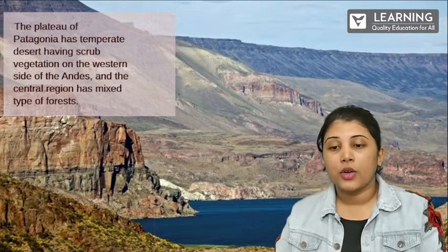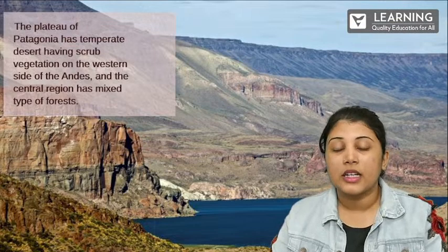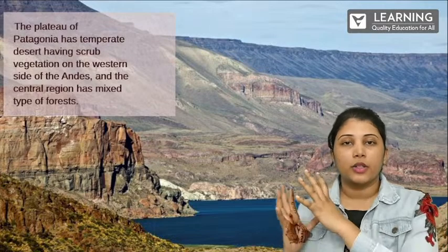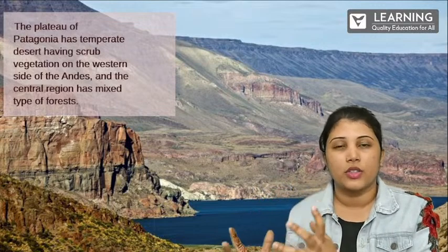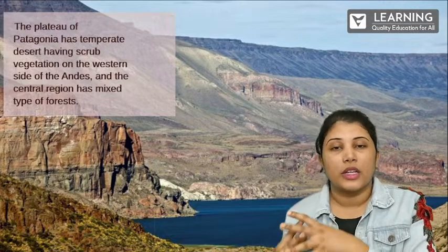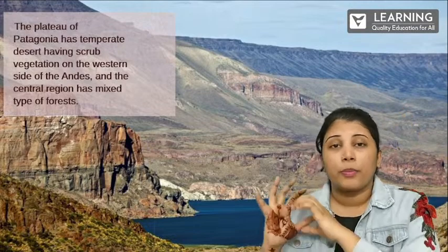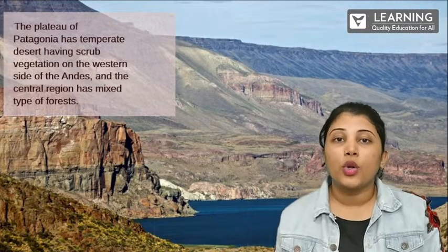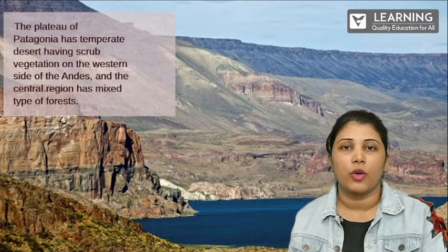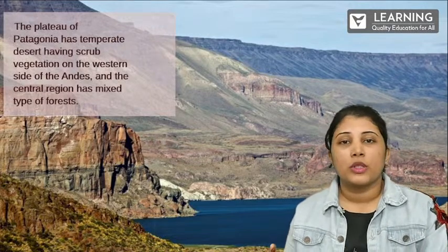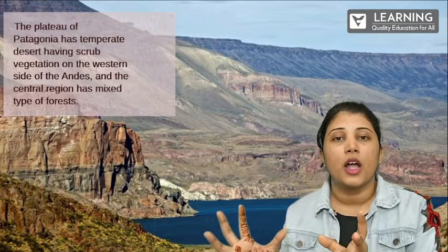The plateau of Patagonia has a temperate desert with scrub vegetation on the western side of the Andes, and the central region has mixed types of forest. This plateau in South America has desert-like temperatures — due to less rainfall and lots of heat, plants don't grow well there; only some coarse grasses grow. The central region has a mix of grass, desert-like areas, dry scrub, and some patches of forest.